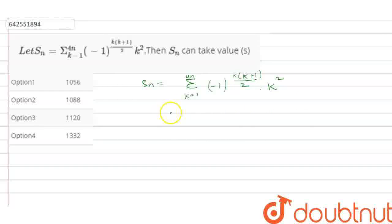Now, if you put the values of k, you will get minus 1 square minus 2 square plus 3 square plus 4 square minus 5 square minus 6 square plus 7 square plus 8 square, and so on.